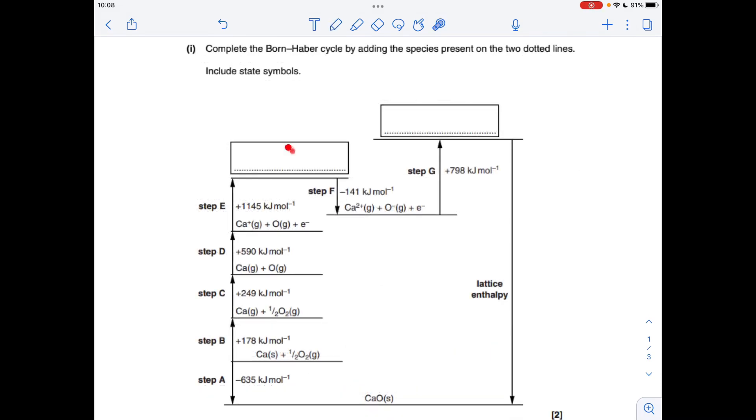So the species in this box here, well what's process taking place for step E? It's going to be the second ionisation energy of calcium. So effectively we're going to turn this Ca+ gaseous ion into Ca2+ gaseous. So species present would be those there.